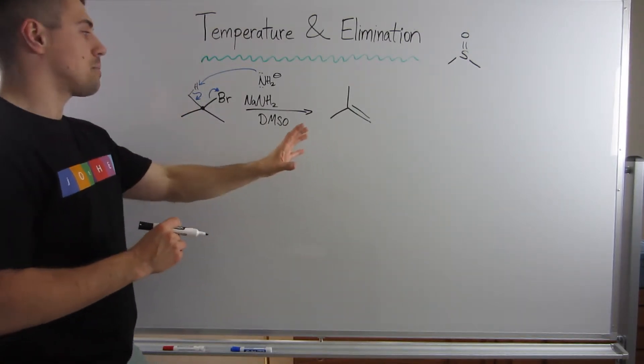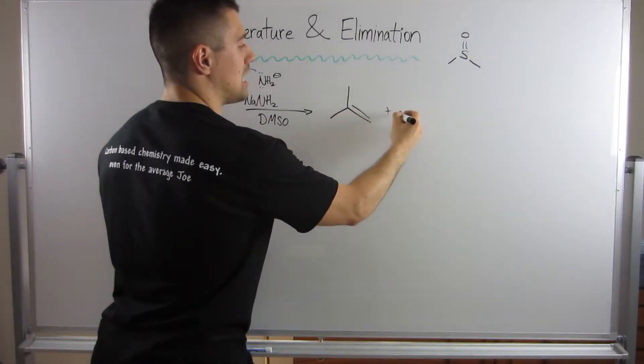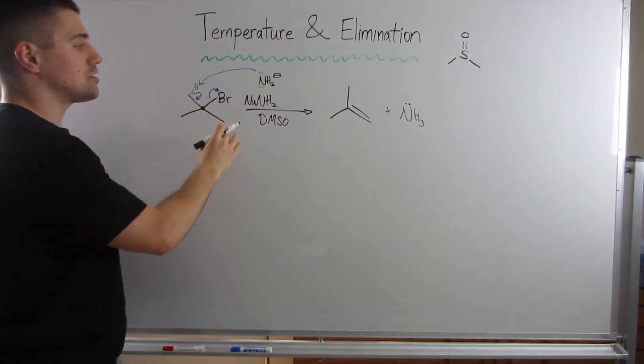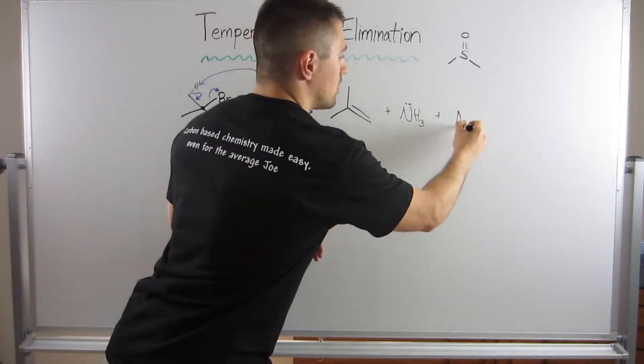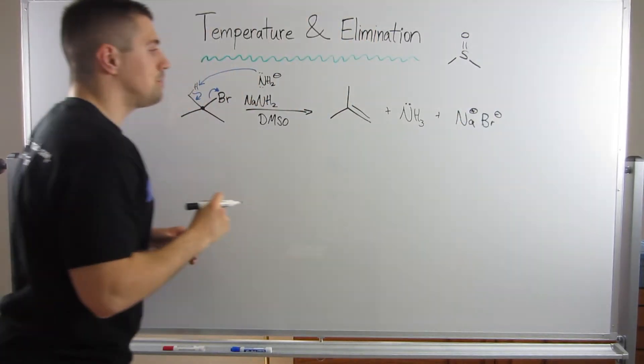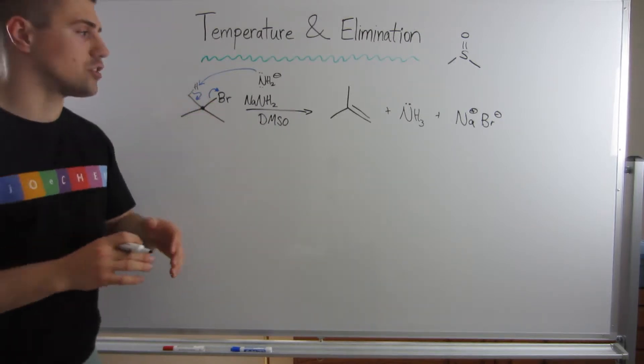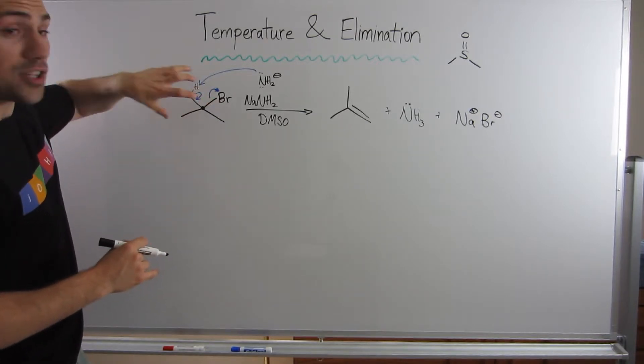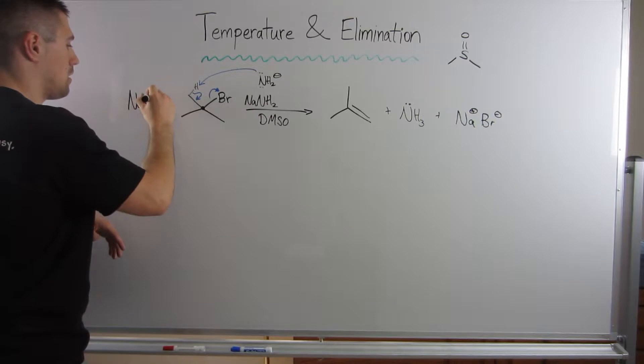What we're producing over here is NH3, neutral ammonia, as well as a Br minus which is going to link up with this sodium. For full clarity, we have the positive sodium, the negative bromine. The DMSO doesn't participate in the reaction so we can kind of ignore it. We can think about it as we have our substrate and our base on one side going to our product on the other side.